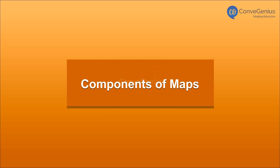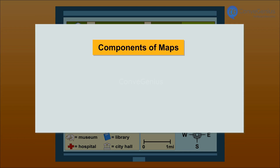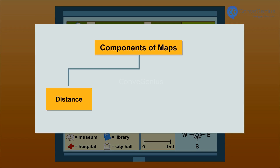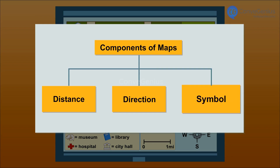Components of Maps. There are three components of a map: 1. Distance, 2. Direction, 3. Symbol.